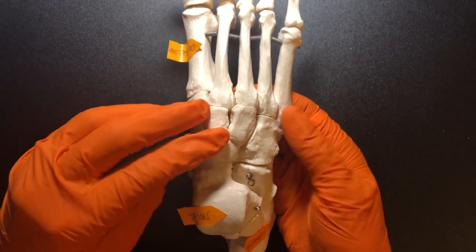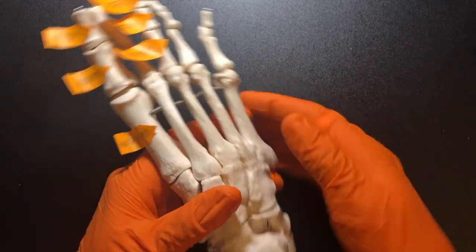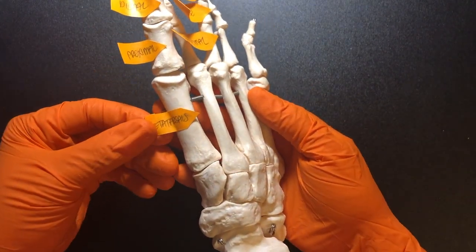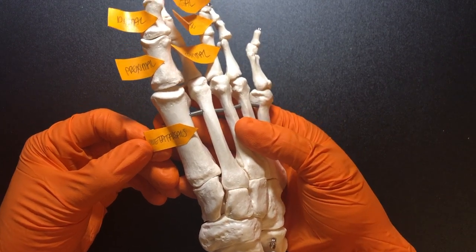These are cuneiforms. And then we have a cuboid, which then articulate with these metatarsals. So whereas in the hands we had metacarpals, in the feet we have metatarsals.